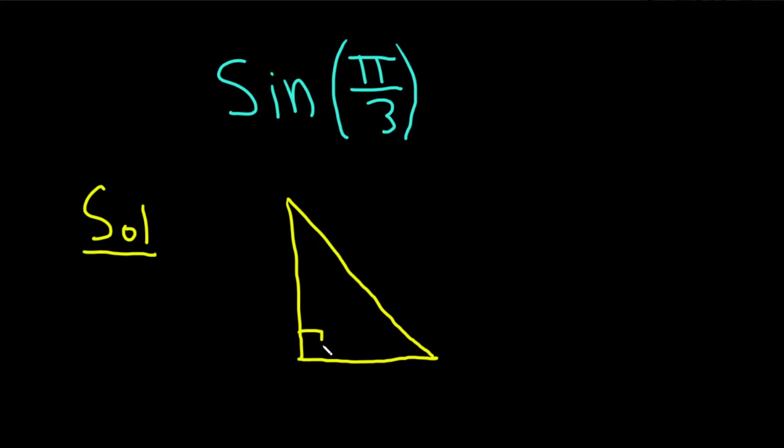So this is a right triangle. This angle here is pi over 3, and this angle here is pi over 6. And the sides are 1, 2, and square root 3.